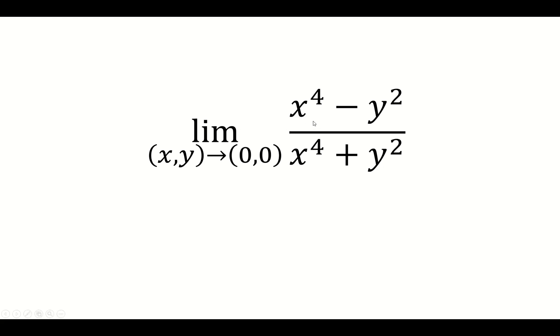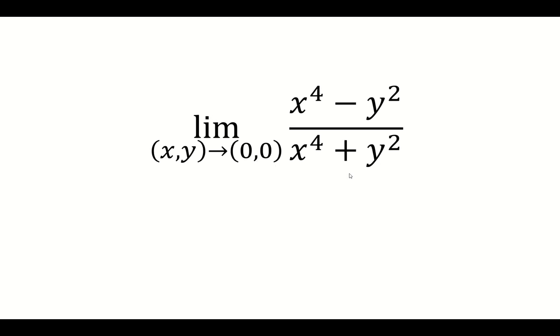I want to find the limit as x and y approach 0, 0 of x to the 4th minus y squared over x to the 4th plus y squared.